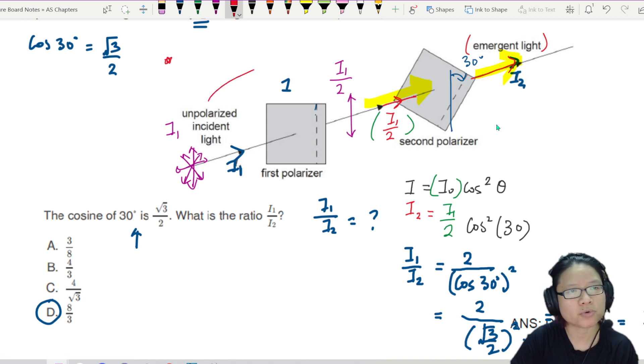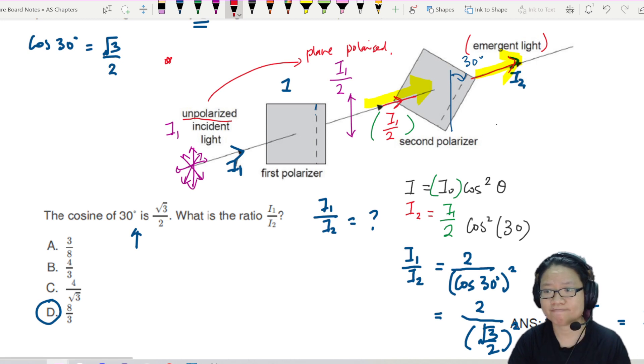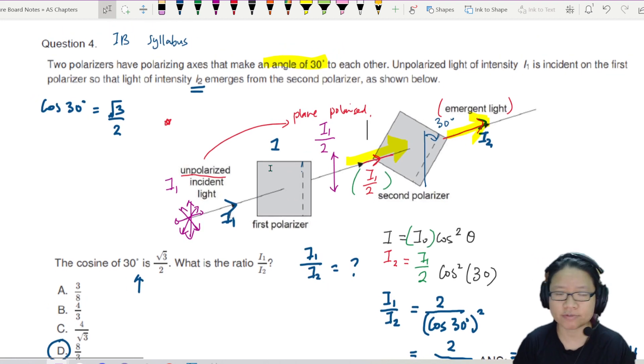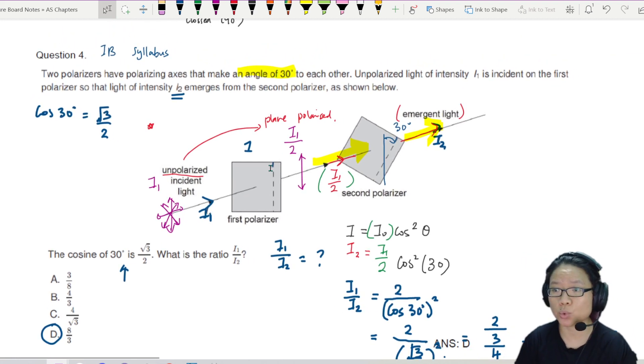And number two, whenever we go from unpolarized to plain polarized, the intensity drops by 2. I'll make a note here for you. From unpolarized to plain polarized, the intensity, if you remember from your lecture, decreases by 2. All right, that's it for this video. It's an objective question from IB. I'll see you in the next one. Cheers.